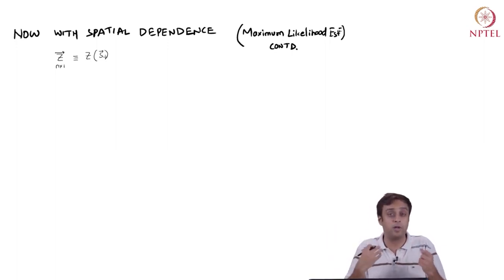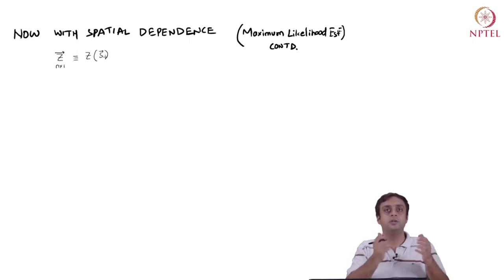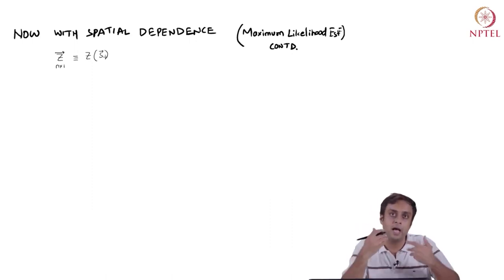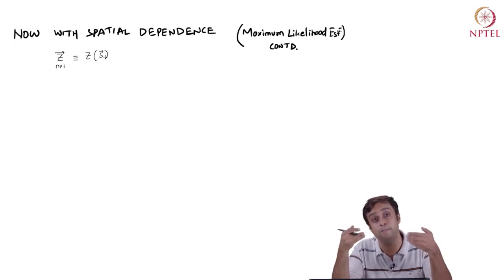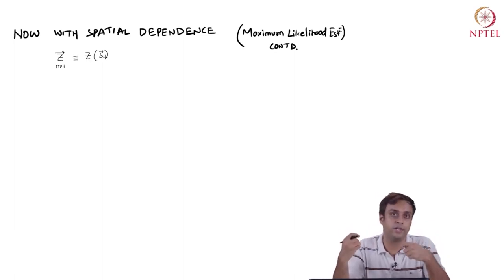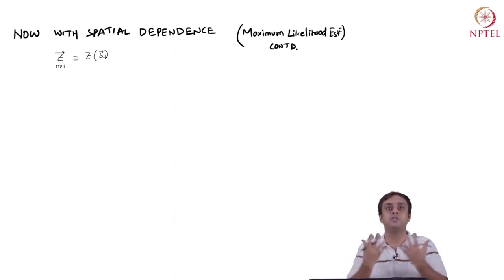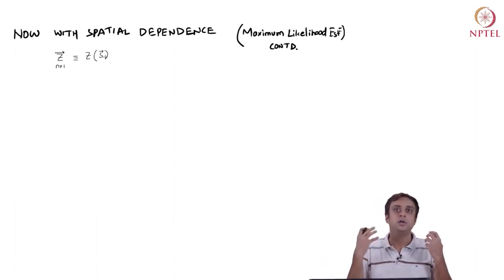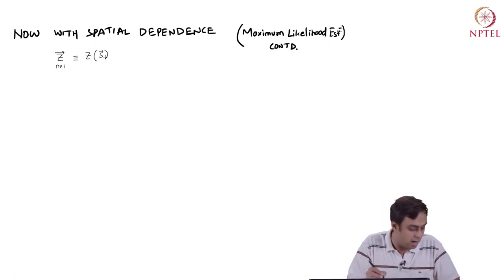Instead of working with the sequence Z₁ to Zₙ, I am now bringing in these location indices S₁, S₂ till Sₙ, just to notationally represent the data as a spatial dataset. Mathematical notation is just helping me give this extra rich dimension to my sequence. I can say Z₁ or Z(S₁) — it would not really matter — but S₁ is a deterministic location and Z is the value realized, which is a random draw from a distribution.